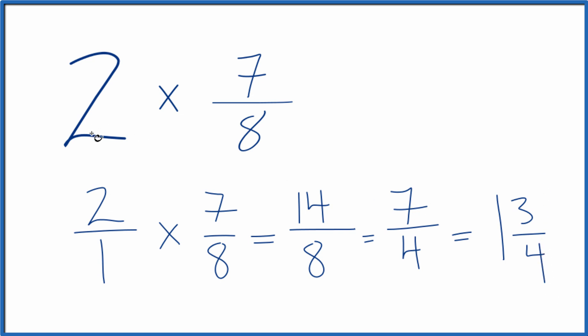So in answer to our question, 2 times 7 eighths is 7 fourths, or if you want the mixed number 1 and 3 fourths. This is Dr. B. Thanks for watchin'.